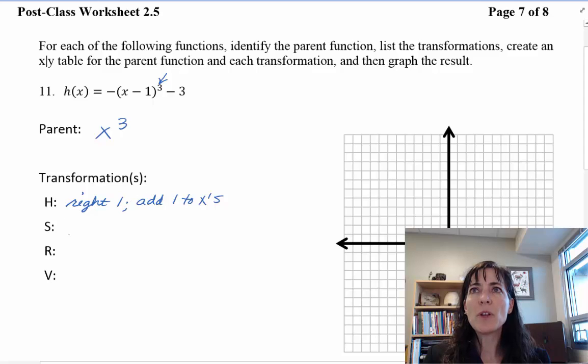And then I'm looking to see if I have any stretch or compress. That would be a number multiplied by the X or multiplied by the quantity that's being cubed. And I don't see any numbers, I just see a negative, which will come on the next step. So I don't see any stretch or compress. I do see an R, which is a reflection. And that's going to be a negative. And that one is outside of the function itself.